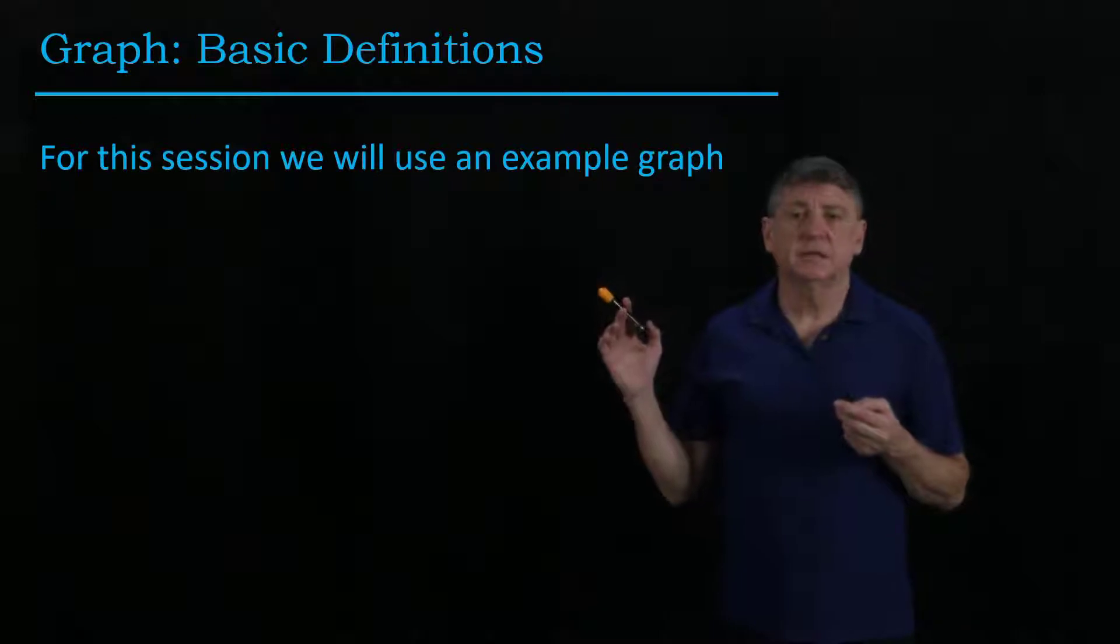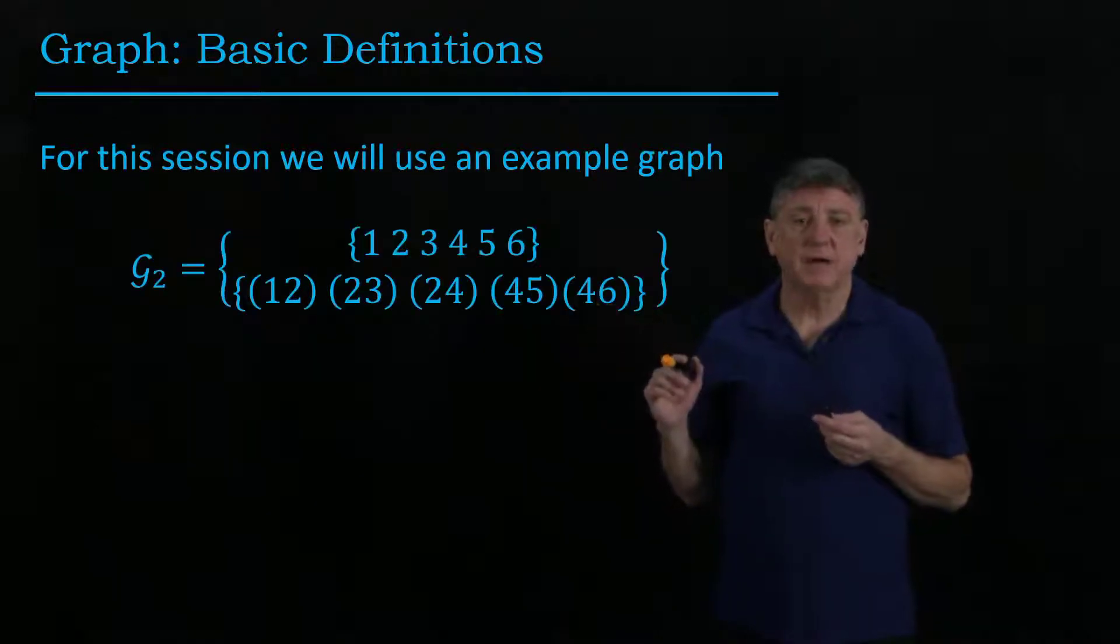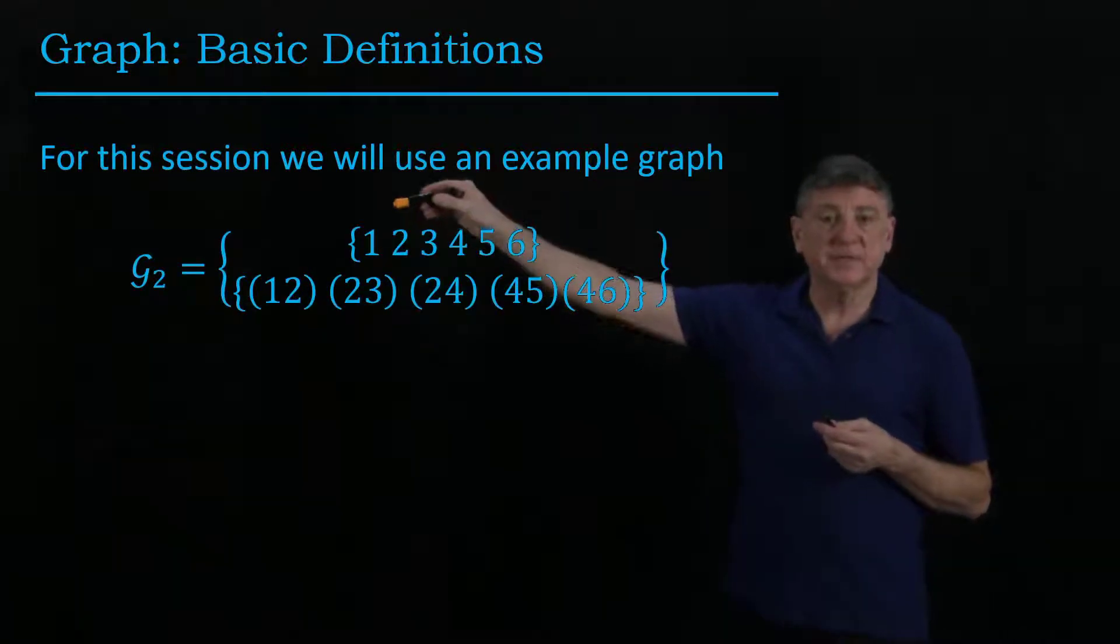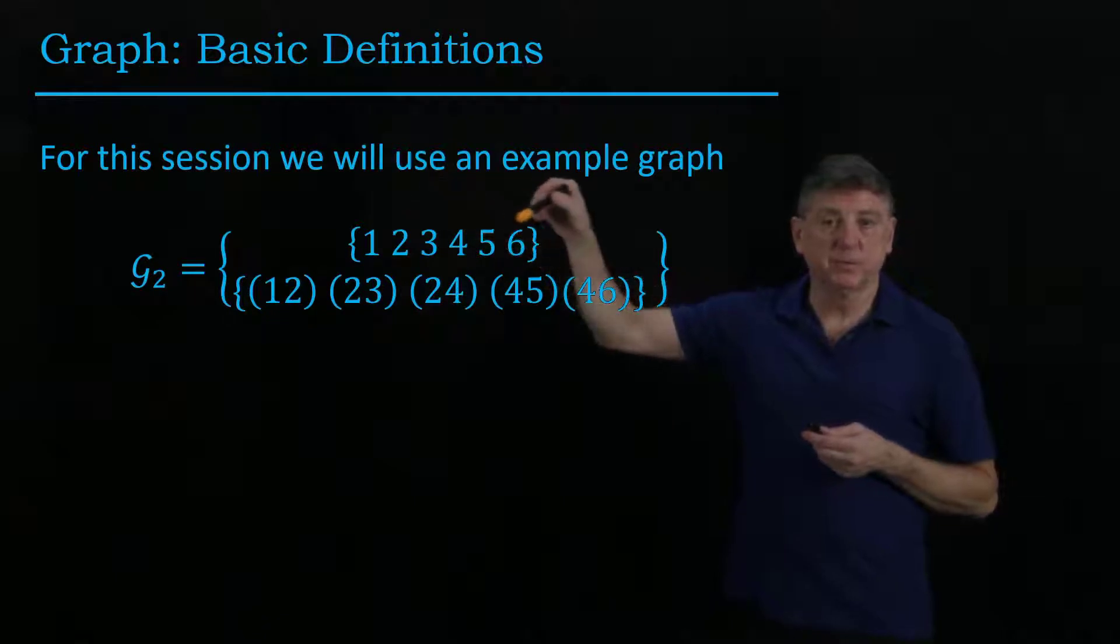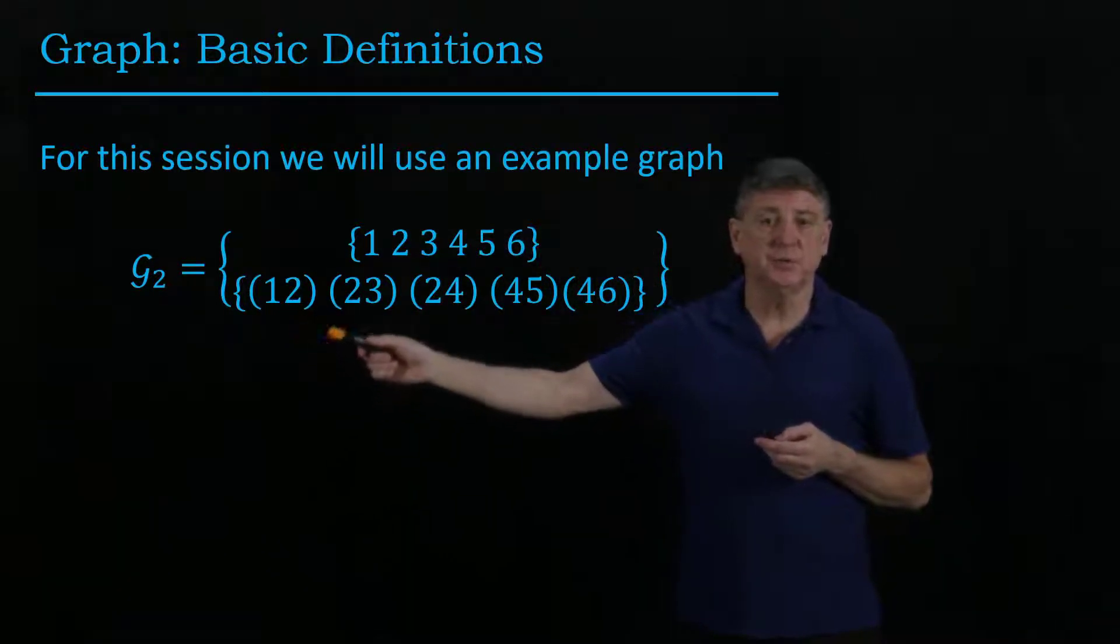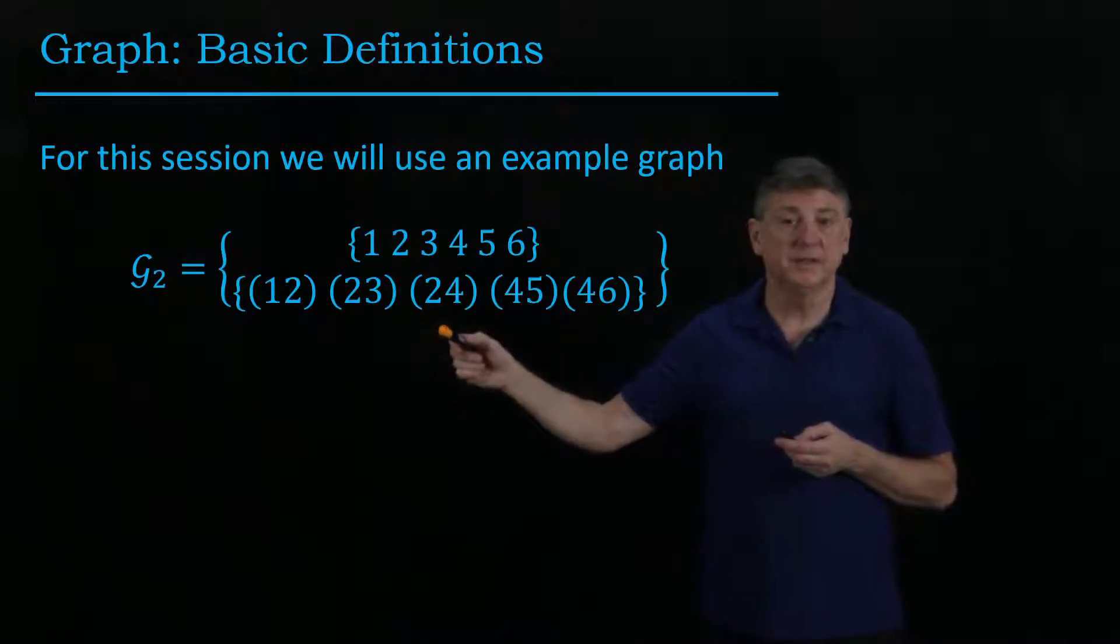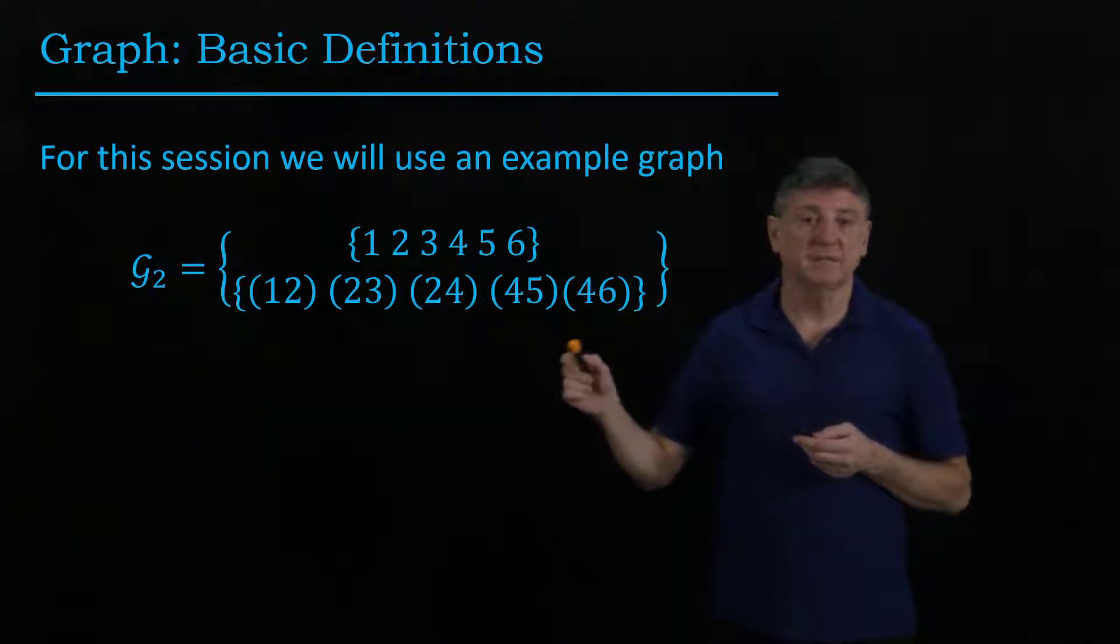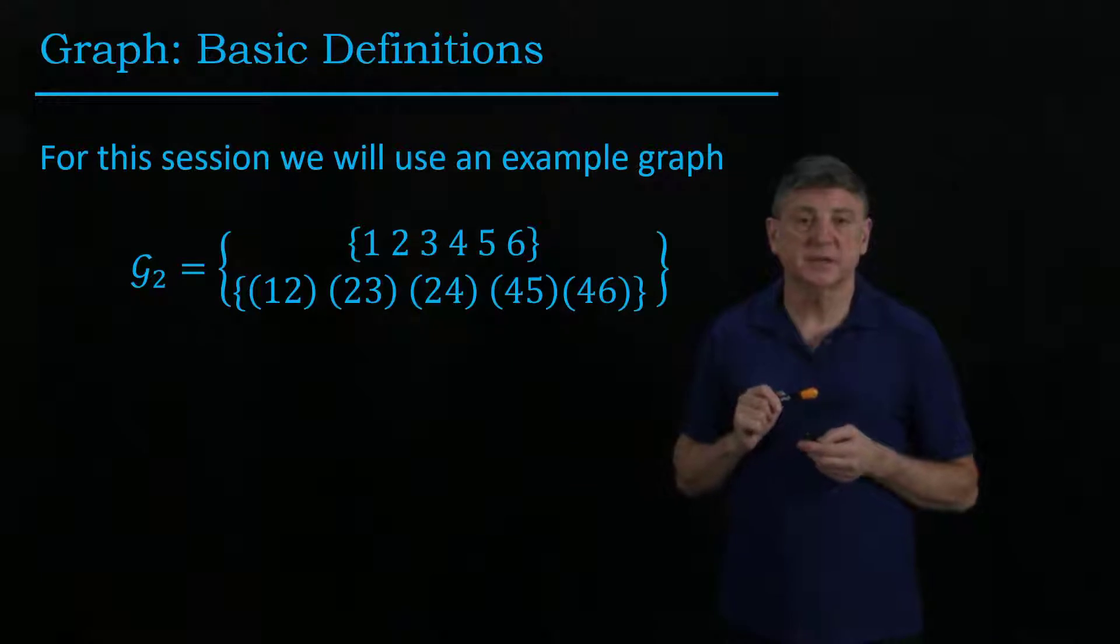What we'll use in this session is an example graph, and it'll have six vertices: 1, 2, 3, 4, 5, 6, and then it will have these edges: 1 connected to 2, 2 connected to 3, 2 connected to 4, 4 connected to 5, 4 connected to 6.